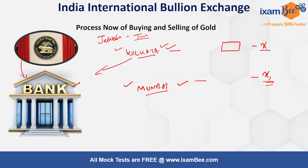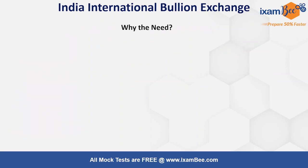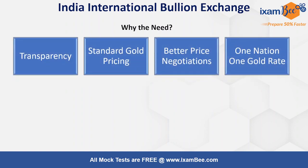For example, Tanishq, which is part of Tata Group, has stores in both Kolkata and Mumbai. The same Tanishq gets a different gold price in Kolkata versus Mumbai. So here is a challenge: in one country, one nation, the price of gold is not standardized — it varies. And only certain RBI-authorized banks had permission, not all banks. Now this process is going to change because things will be done through India International Bullion Exchange. Let's understand the need — the first need is transparency.